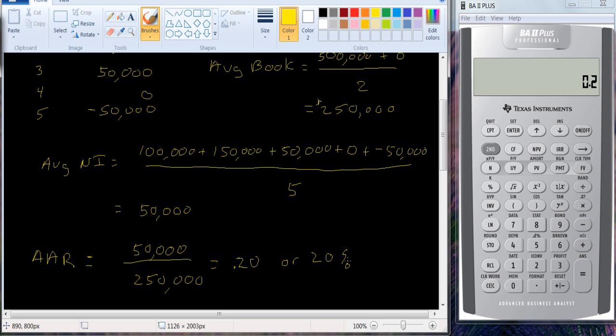Now one of the nice things about accounting rate of return is that it's relatively easy to calculate. The information you need should be readily available. I mean corporations have to report their accounting information, so it should be fairly easy to get this information. They'll use proforma financial statements to forecast the cash flows and the net income from undertaking a project, so that works out pretty well.